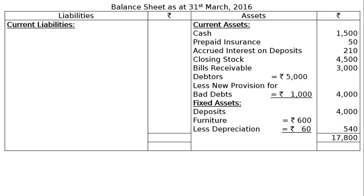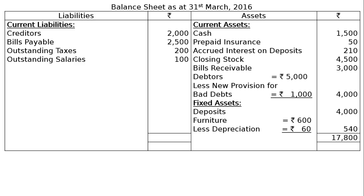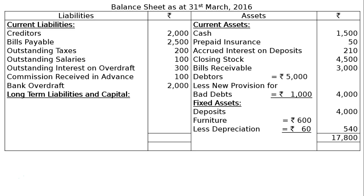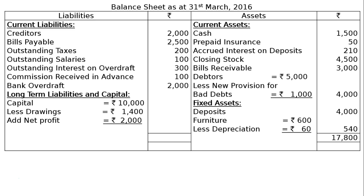On the liabilities side, current liabilities: creditors Rs 2,000; bills payable Rs 2,500; outstanding taxes Rs 200; outstanding salaries Rs 100; outstanding interest on overdraft Rs 300; commission received in advance Rs 100 — these last four are adjustments. Bank overdraft Rs 2,000 is also under current liabilities. Long-term liabilities and capital: capital Rs 10,000, less drawings Rs 1,400, add net profit Rs 2,000, giving Rs 10,600 in the final column. The total is Rs 17,800. This is the final answer.